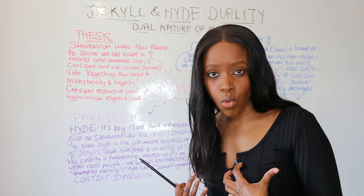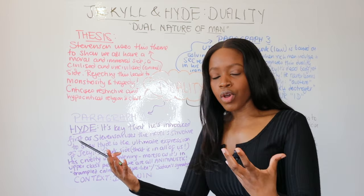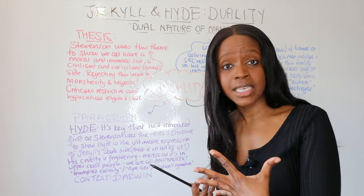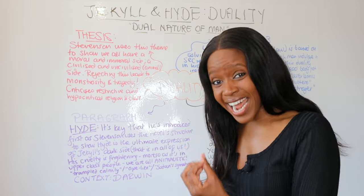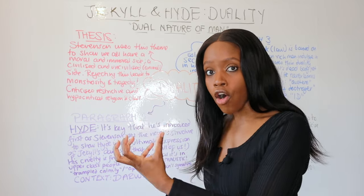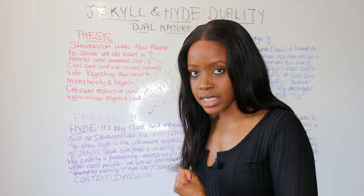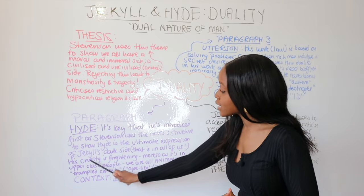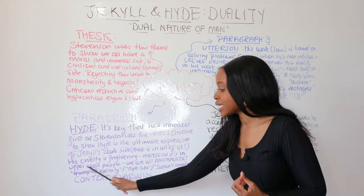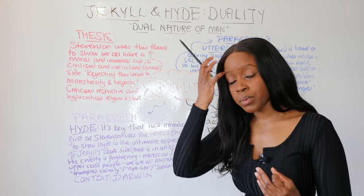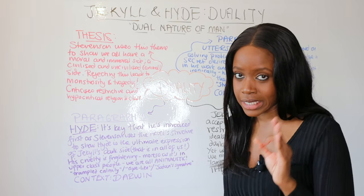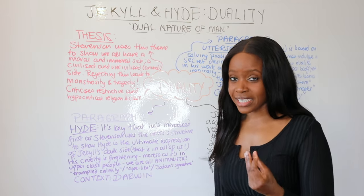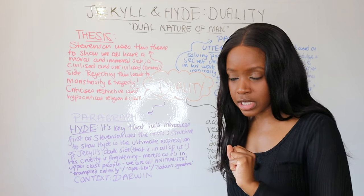When Victorian readers were reading this novel they were quite horrified - do I have this animalistic side? And Stevenson was saying yes, you do. Hyde is the ultimate reflection of this dark side that resides in someone highly respected and upper class like Dr Jekyll. Hyde's cruelty is frightening more so because it's not only in upper-class members of society like Jekyll - it's in all of us. We are all animalistic.